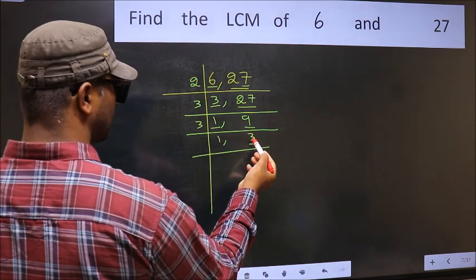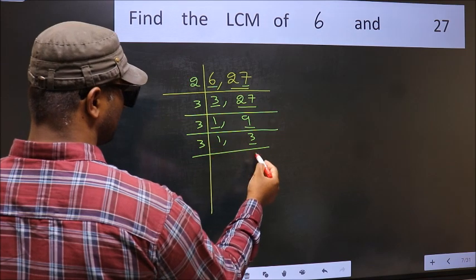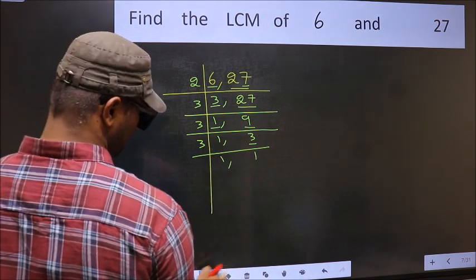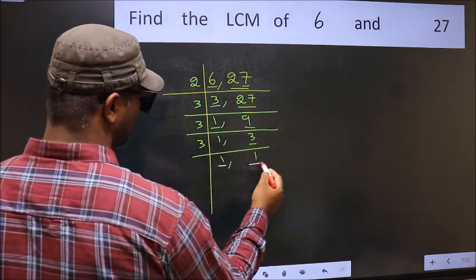Now here we have 3. 3 is the prime number, so 3 times 1 is 3. So we got 1 in both the places.